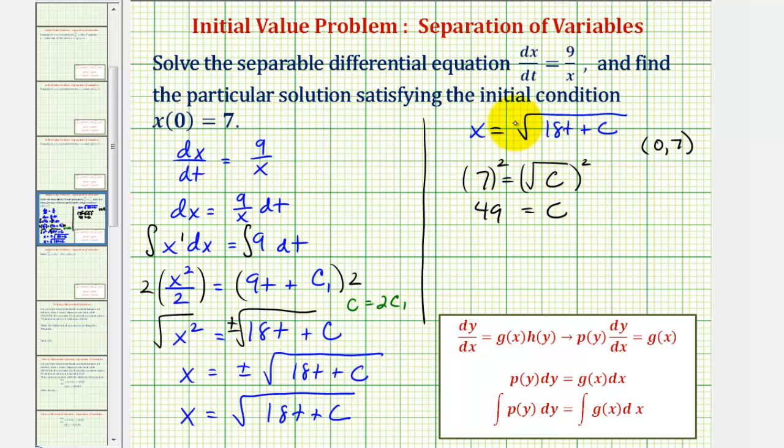Which means the particular solution to this given differential equation with the initial condition x(0) = 7 is x(t) equals the square root of 18t plus 49.